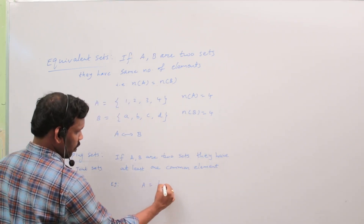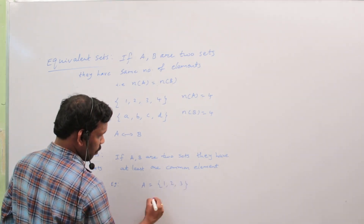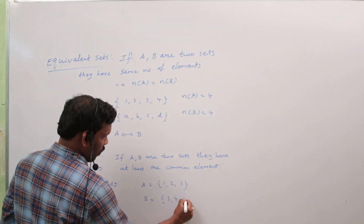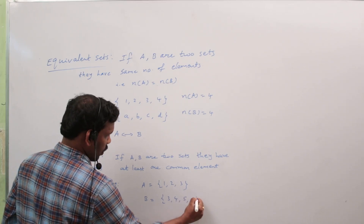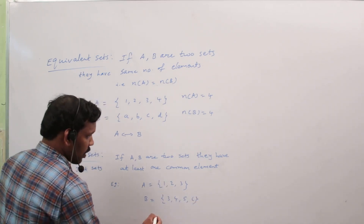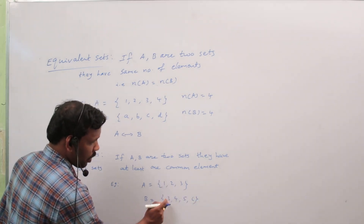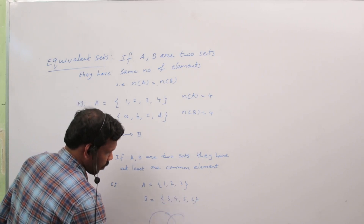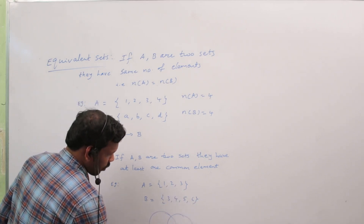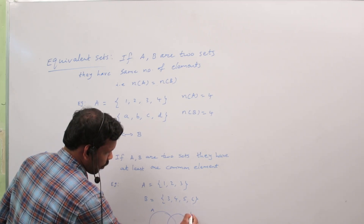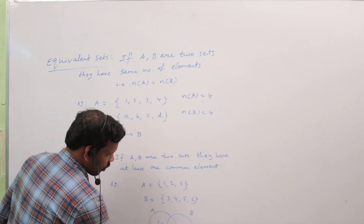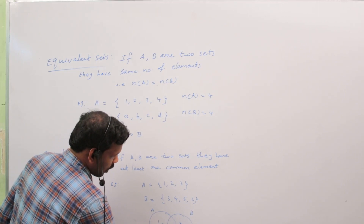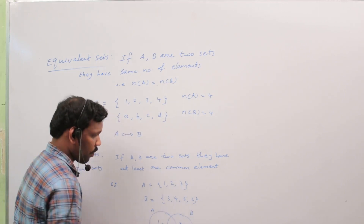For example, A = {1, 2, 3} and B = {3, 4, 5, 6}. The two sets have one common element. The common element is 3. So these are overlapping sets.